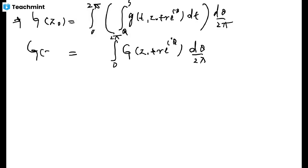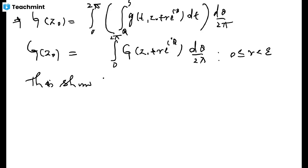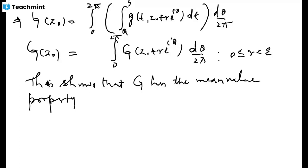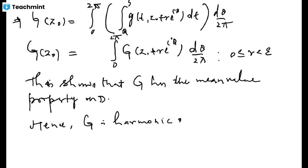So we end up with G(z₀) = (1/2π)∫₀²π G(z₀ + re^{iθ}) dθ, meaning the value of G at z₀ equals the average of G on the circle of radius r centered at z₀. This holds for any r between 0 and epsilon, showing G has the mean value property. Since z₀ was arbitrary in D, G has the mean value property on all of D, and hence by the theorem G is harmonic in D.